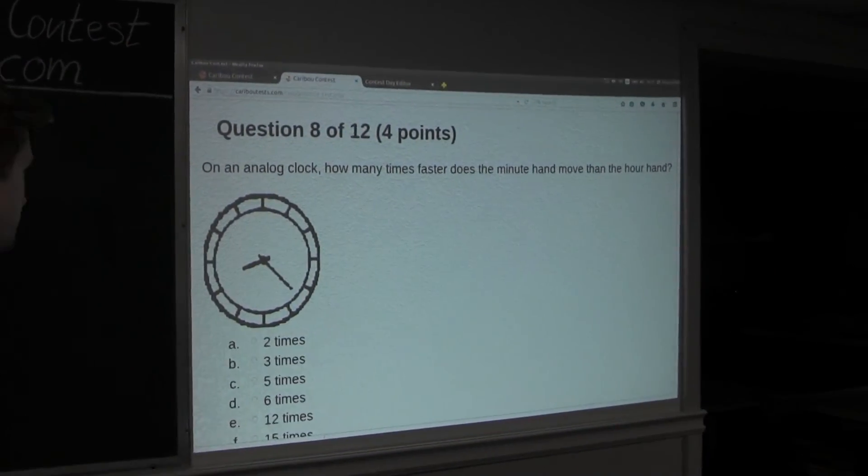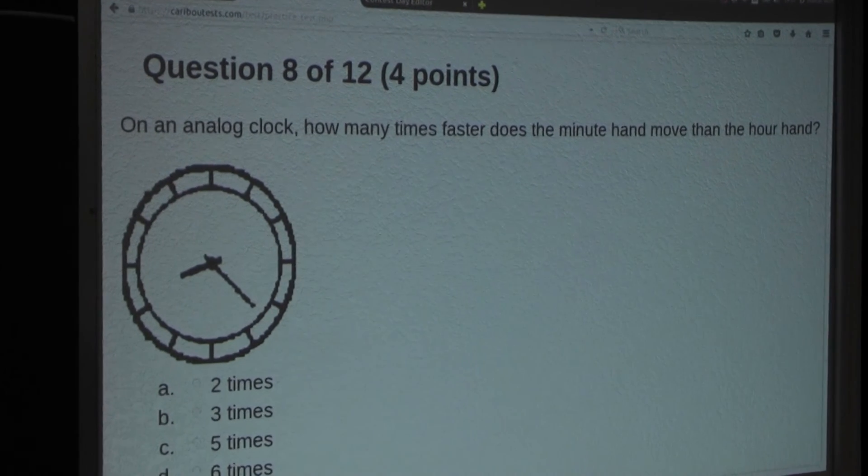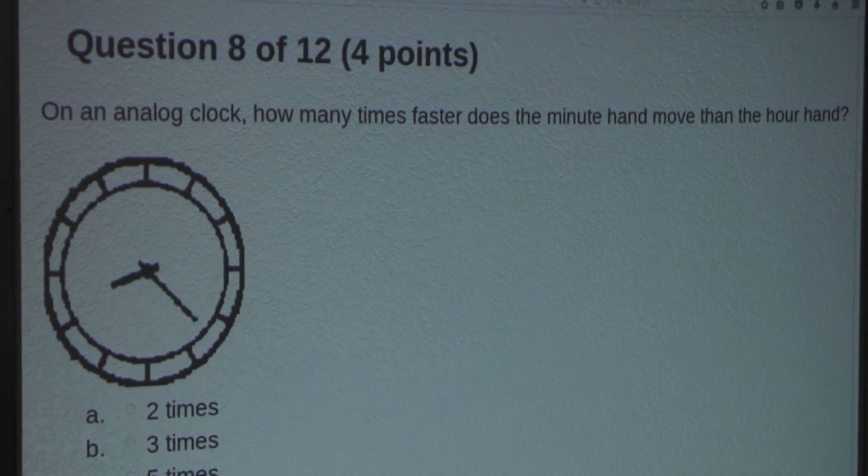So the question is, on an analog clock, how many times faster does the minute hand move than the hour hand?